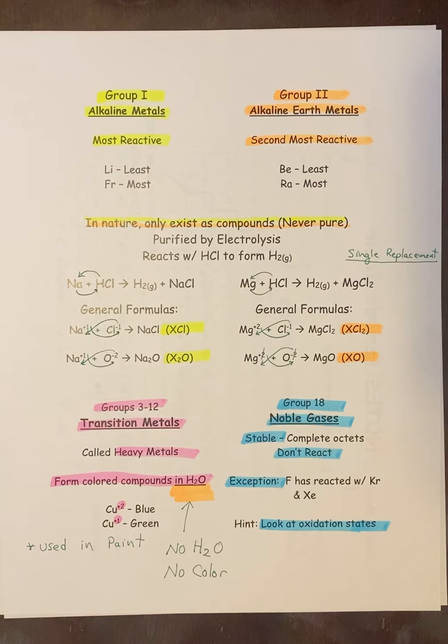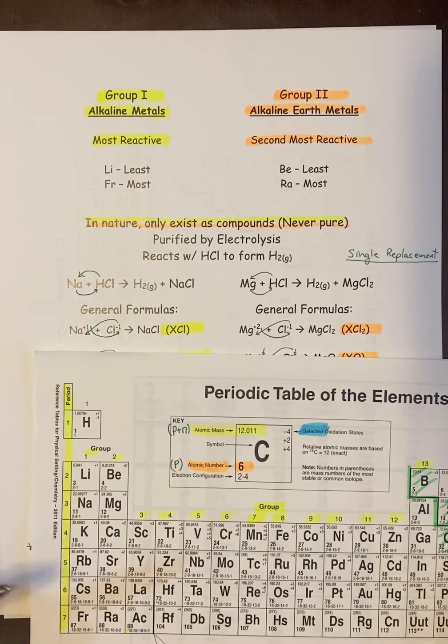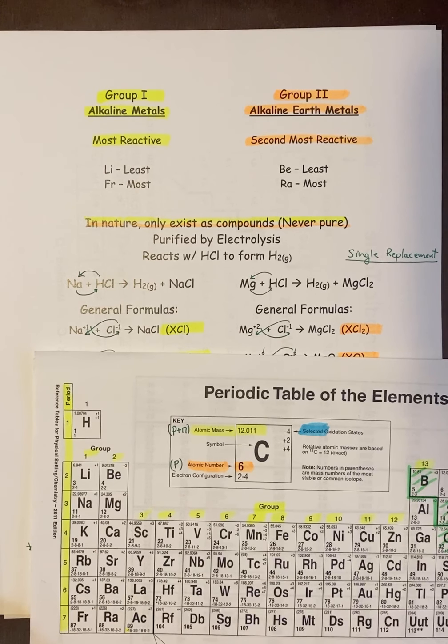So for the first one, we've got group 1 elements. They are from lithium straight down. They are the alkaline metals. They are the most reactive on the periodic table. When you put lithium in water, it'll spark and fizz and maybe catch on fire. When you put francium in water, it'll explode like a bomb. So they react violently with water, and the further down you go, the more violent they get.